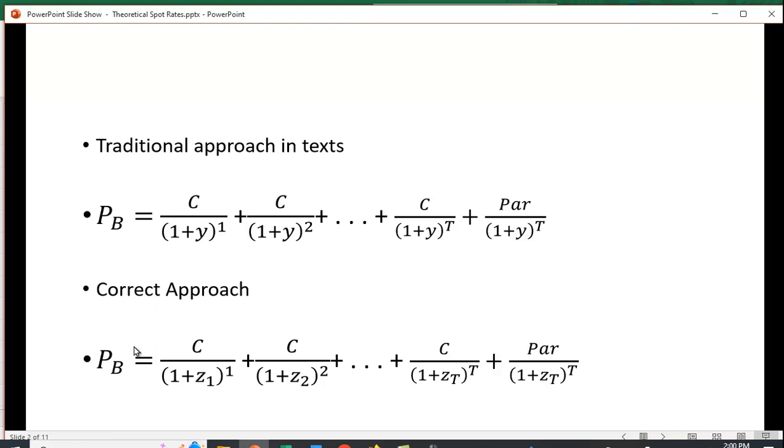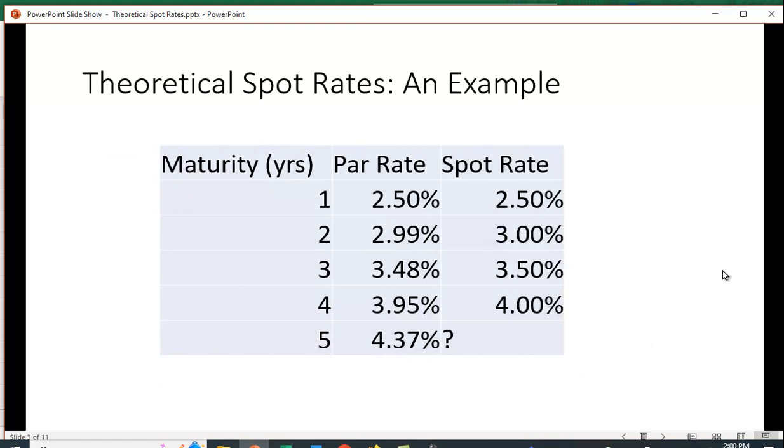We're going to have the one period spot rate, the two period spot rate, etc. So here's an example. This comes from some CFA reading, and they want you to calculate the spot rate for year five. They've already calculated them for years one through four.